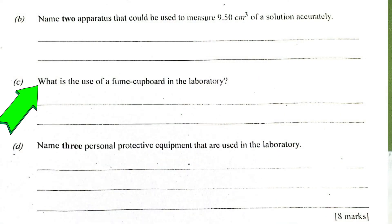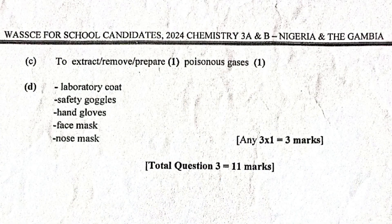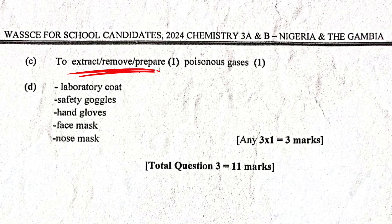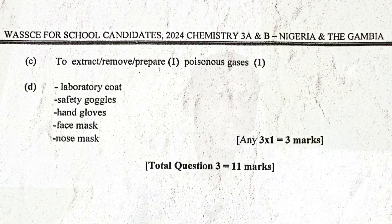So let's go to C now. So C. The question in C is, what is the use of a fume cupboard in the laboratory. A lot of students also made mistakes here. Some of them are saying it prevents us from poisoning of gases. It is not just preventing. Okay. It is either you say to extract or to remove or to prepare. There is one mark for that. Poisonous gases. Or you can mention hazardous gases. Okay. It will also be marked. Because poisonous and hazardous are the same. So there are 2 marks for C over there.